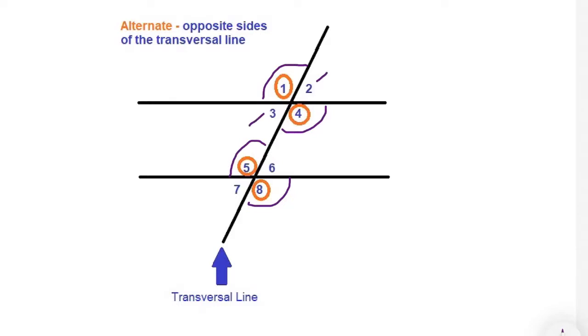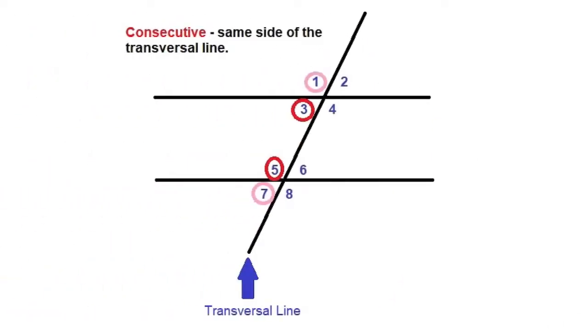2 and 3 are alternate and congruent. 6 and 7 are also alternate and congruent. There are also angles on the same side that are congruent, and they are called consecutive angles.